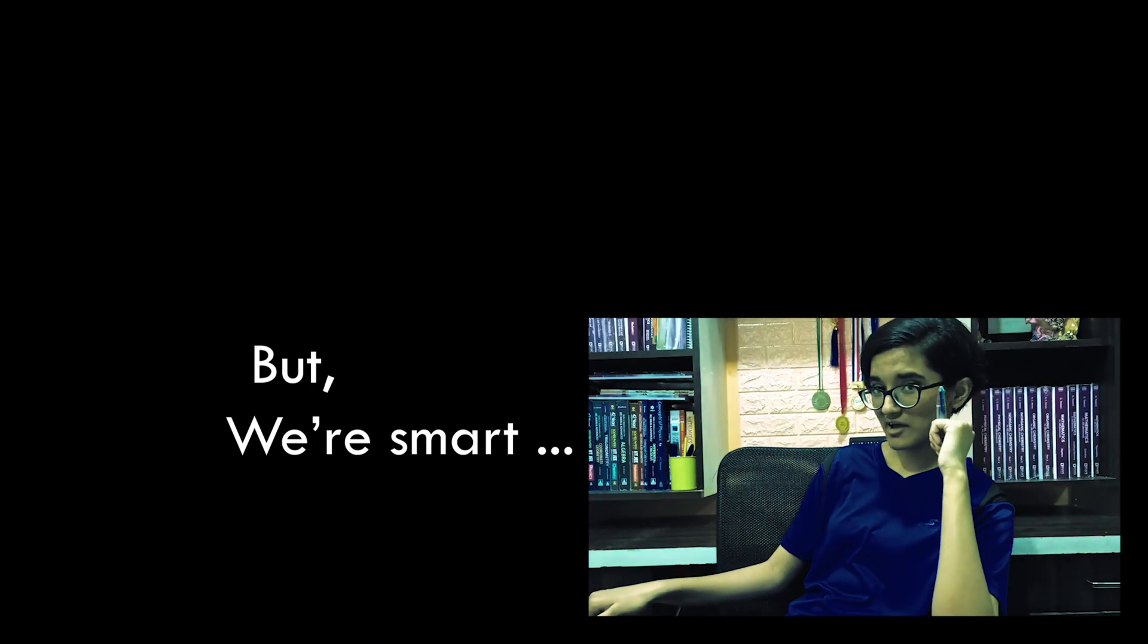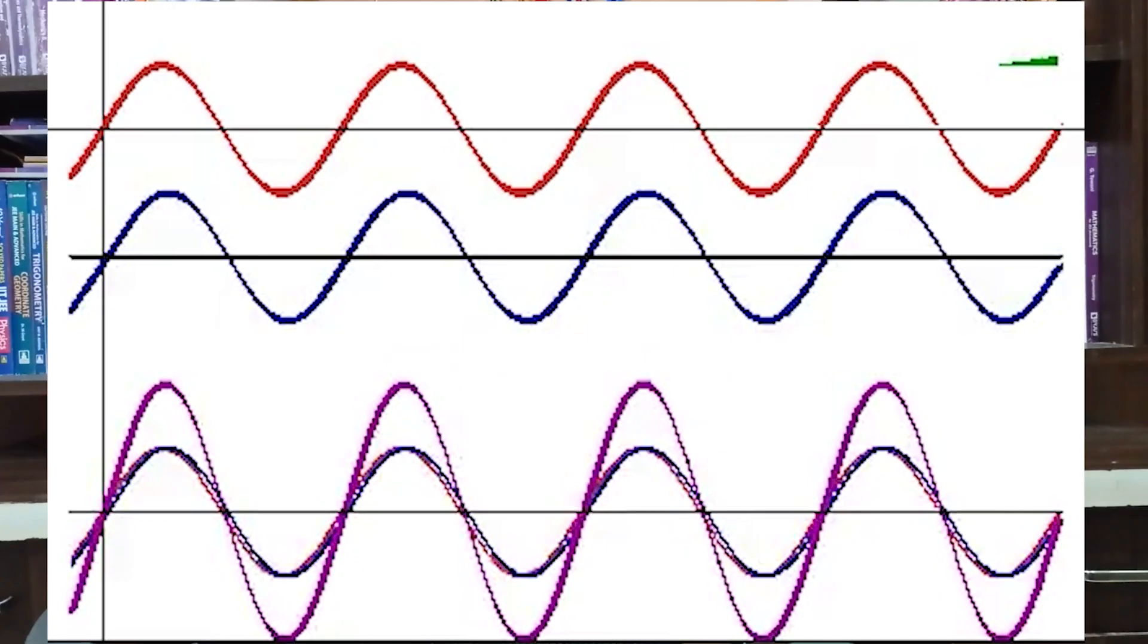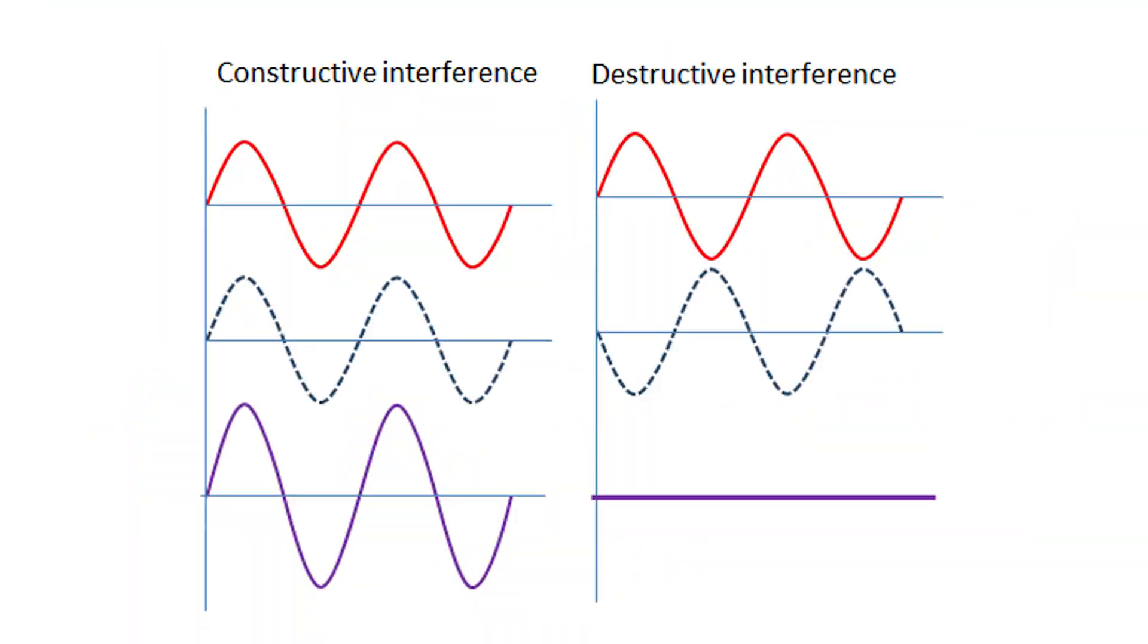We have another example. The famous Young's double slit experiment. This experiment basically demonstrates the constructive and destructive interference of light.